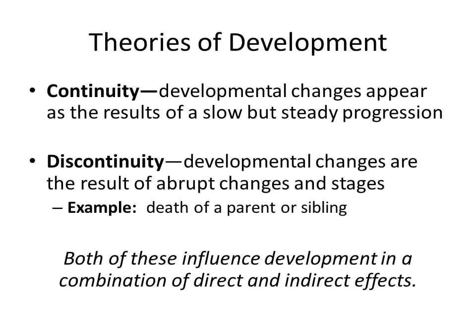When it comes to development, we have to understand the difference between continuity and discontinuity. Continuity is developmental changes that appear as the result of a slow but steady progression. For example, you're born and around 9 to 11 months you start to pull yourself up with the coffee table or crib. By 12 months you can manage to get yourself up, and between 12 and 14 months you start to walk — all slow changes that occur at a fairly regular schedule.